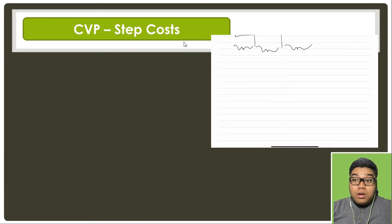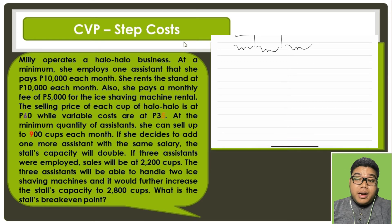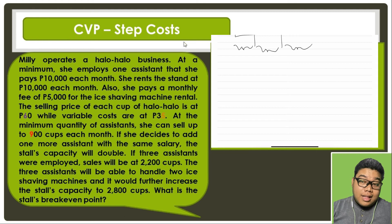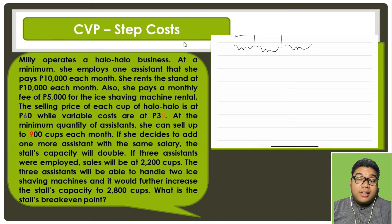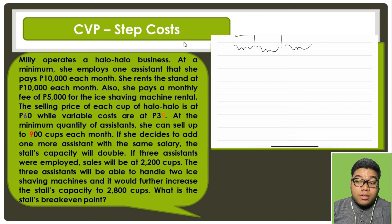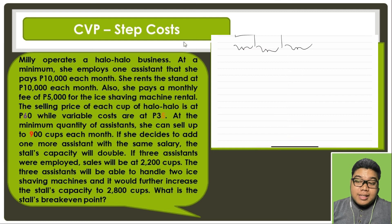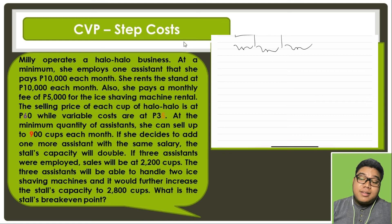The next problem involves a Halo-Halo business. At a minimum, she employs one assistant paid $10,000 each month, rents a stand for $10,000 per month, and pays a monthly fee of $5,000 for the ice shaving machine rental. The selling price of each cup of Halo-Halo is $60, while variable costs are $35. At minimum staffing, she can sell up to 900 cups per month. Adding one more assistant doubles capacity. With three assistants, sales reach 2,200 cups. Three assistants can handle two ice shaving machines, increasing capacity to 2,800 cups. What is the break-even point?